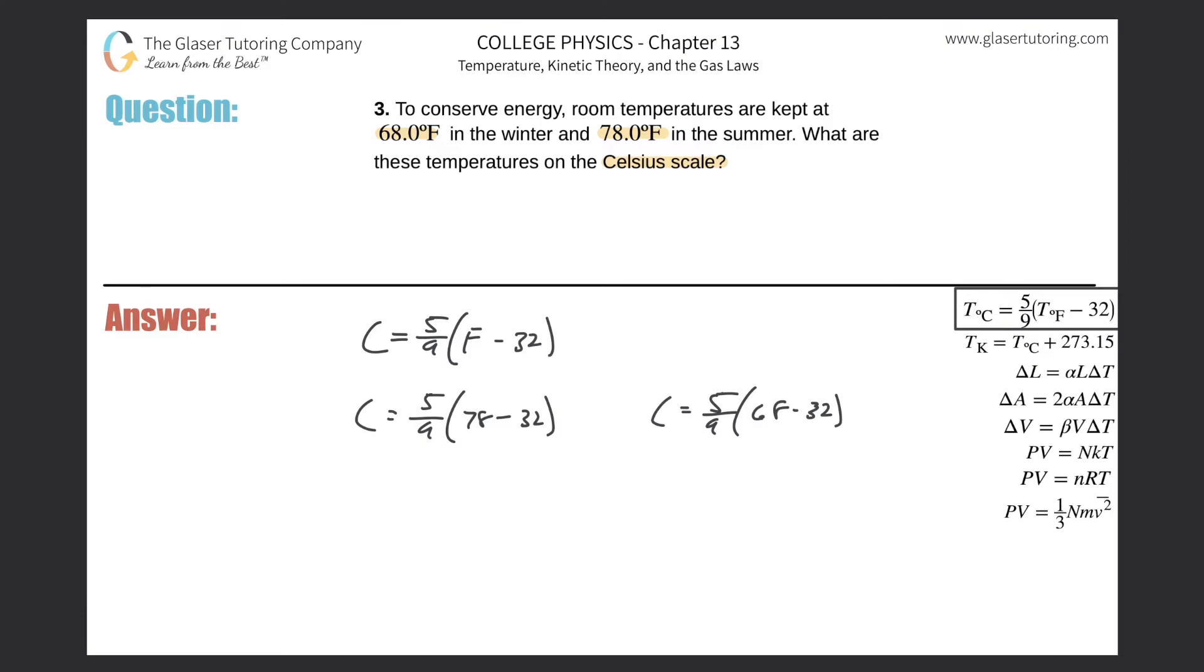Just plug it all into the calculator. So it's going to be 5 over 9 times then 78 minus 32. So the first one's about, and I guess we'll have about three sig figs or whatever, so Celsius will be equal to 25.6. That takes care of that one.